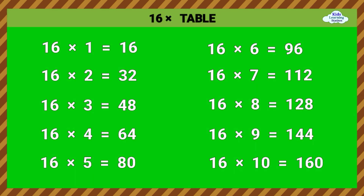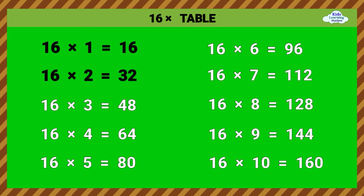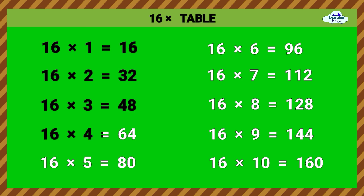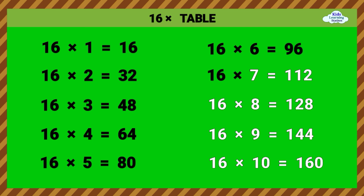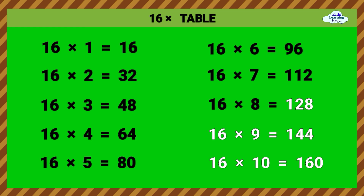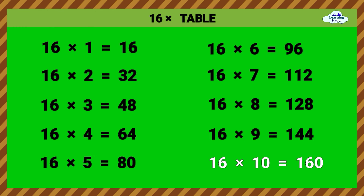Sixteen Times Table. 16 times 1 equals 16. 16 times 2 equals 32. 16 times 3 equals 48. 16 times 4 equals 64. 16 times 5 equals 80. 16 times 6 equals 96. 16 times 7 equals 112. 16 times 8 equals 128. 16 times 9 equals 144. 16 times 10 equals 160.